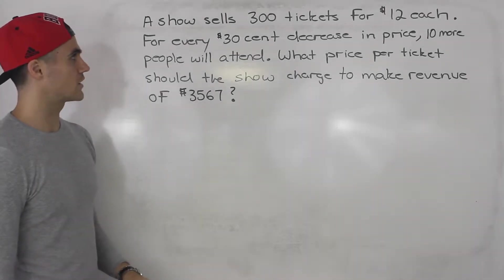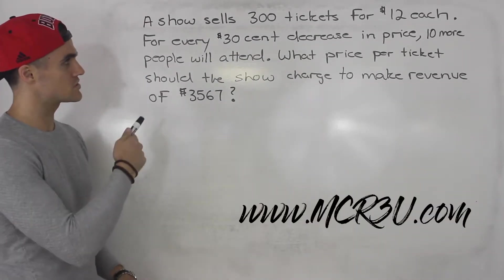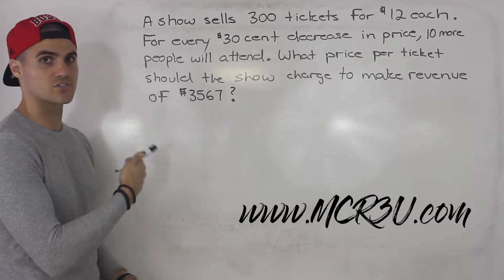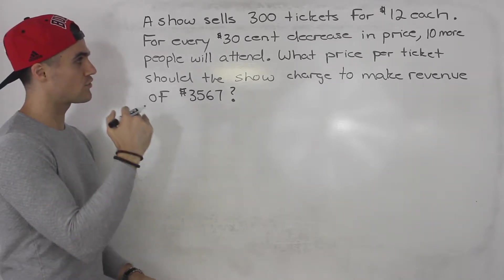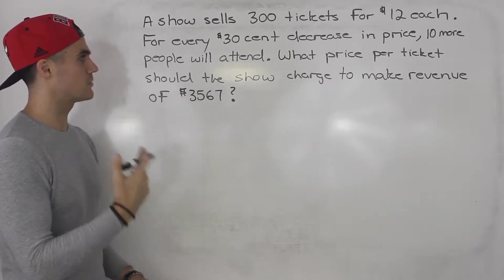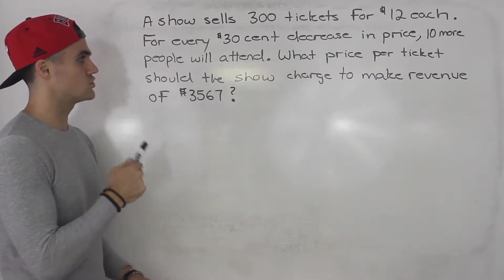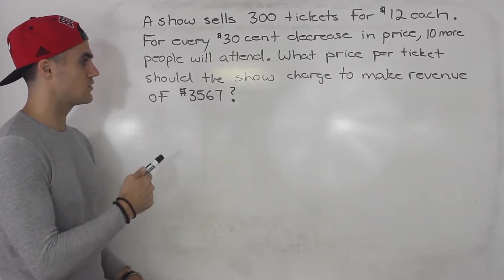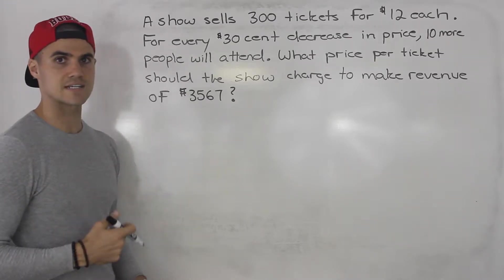Welcome back everybody. Moving on with quadratic equations. We're told that a show sells 300 tickets for $12 each. For every 30 cent decrease in price, 10 more people will attend. What price per ticket should the show charge to make revenue of $3,567?